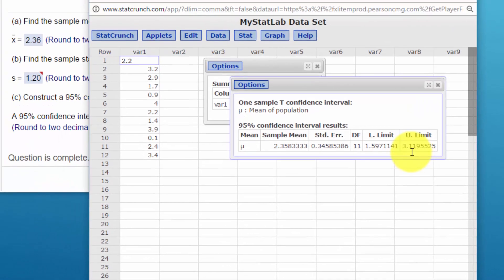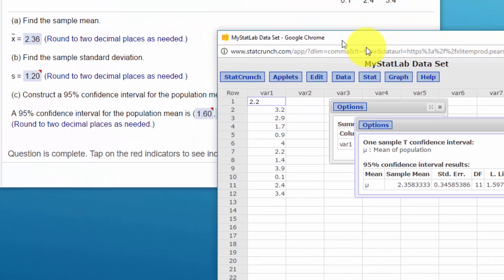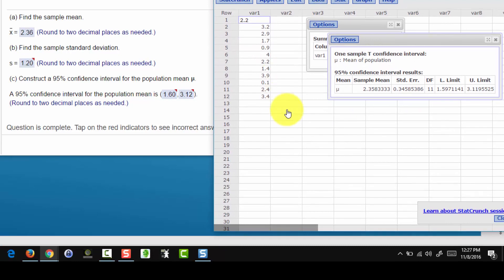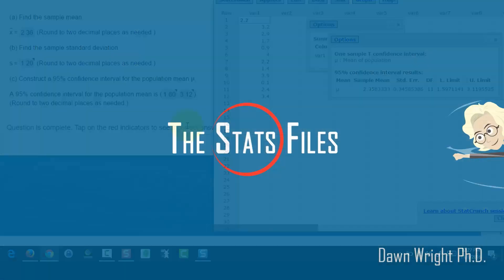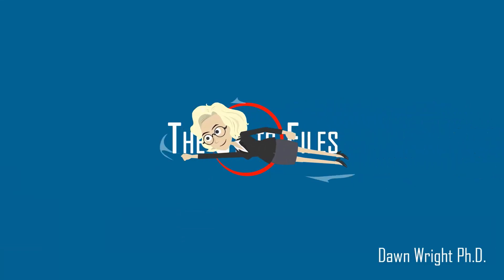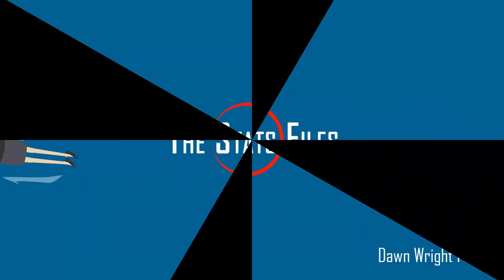And let's see. I'm sorry. 1.60. I said that wrong. 1.60 or 1.59 rounded is 1.60 and 3.12. So that's how fast you can solve it using StatCrunch. 1.60. I'll take out a future.